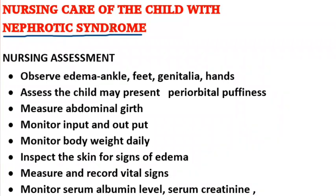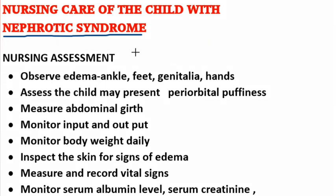Nothing can happen to the child with nephrotic syndrome. Nephrotic syndrome is a kidney disease with a group of symptoms, including protein in urine, low protein in blood, low albumin level in blood, and hyperlipidemia.